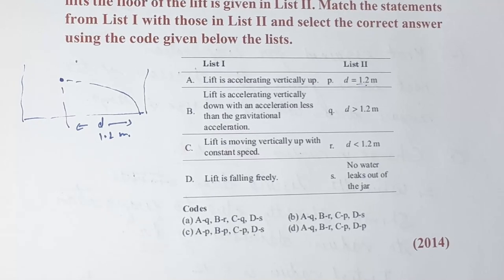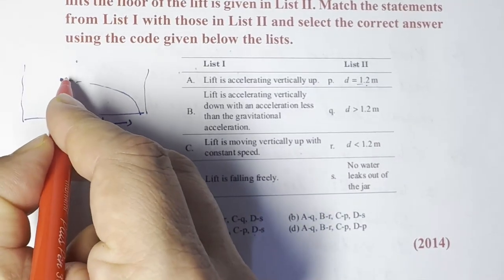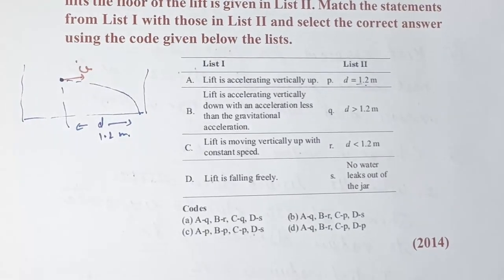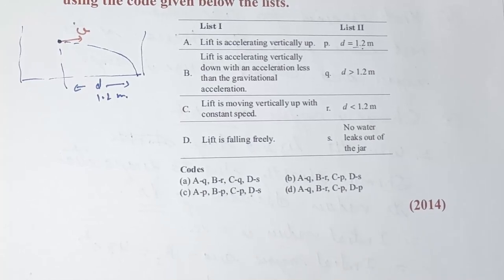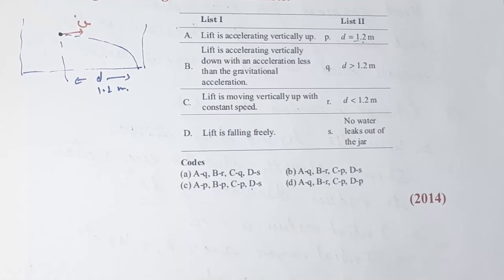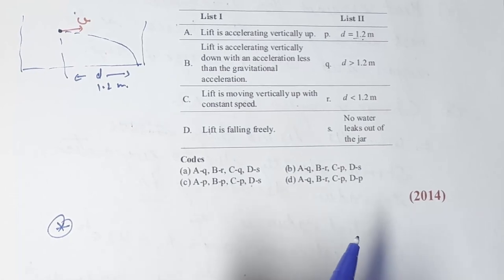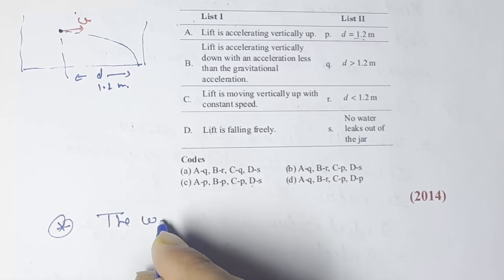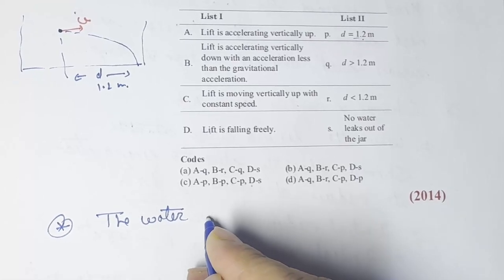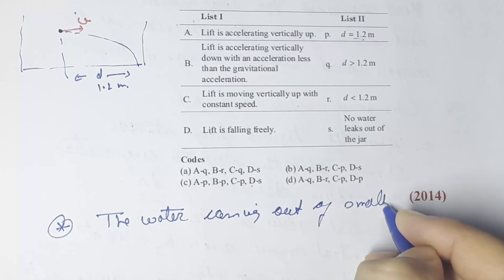First, we find the velocity of water coming out of the jar. We denote this velocity as v. This velocity is found using Torricelli's law: v equals square root of 2gh. This is the velocity of efflux — the velocity of water exiting from the small hole.